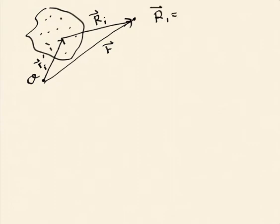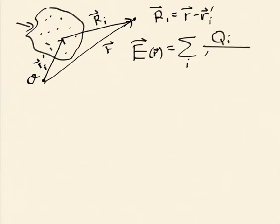So if I define my origin to be here, and I define the location of the i-th particle to be r prime i, and then I have a location for my observation location that's r, I'm going to have a vector that connects those two, that's going to be r i. Where r i is r minus r prime i, where I use the prime to denote the location of the actual charge. So in this case, the electric field.